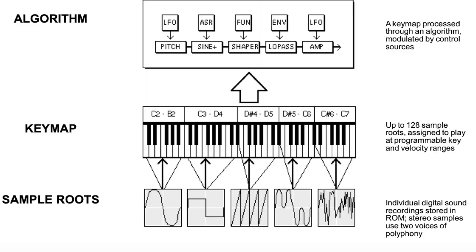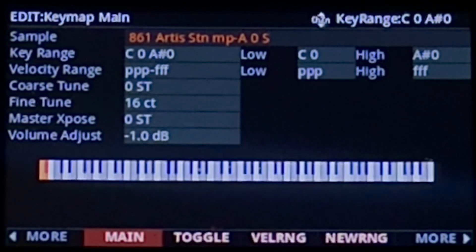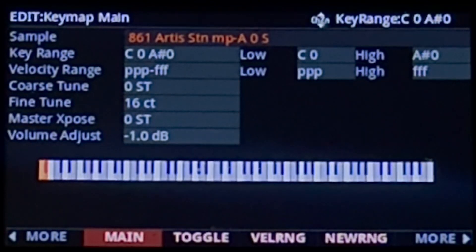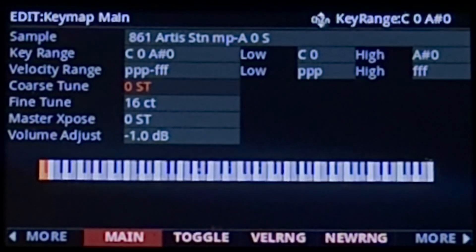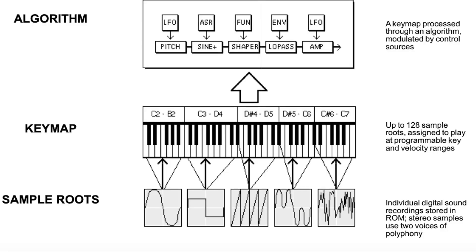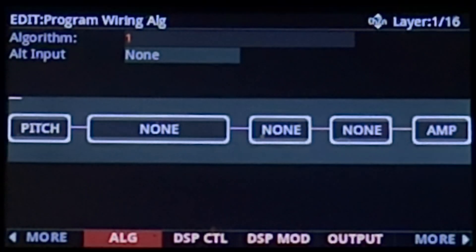The typical VAST layer within a program would have its starting point at an audio source known as a key map. A key map is simply a collection of audio samples compiled into a single data set and stored within the keyboard. These samples can then be assigned to different ranges of the keyboard and play back at different pitches and velocities. From here, the sound signal undergoes various levels of processing through an algorithm, which is found on the algorithm page when you're working in edit mode.